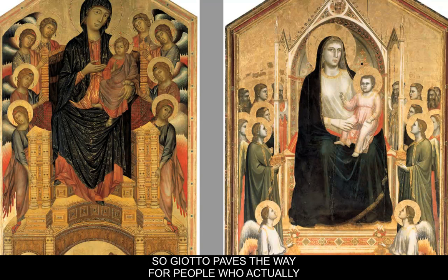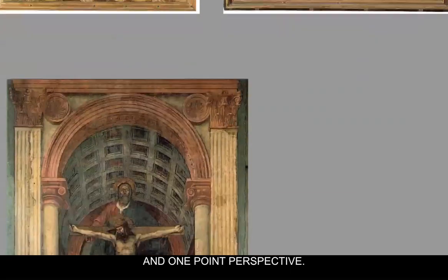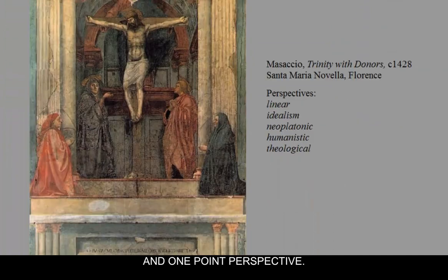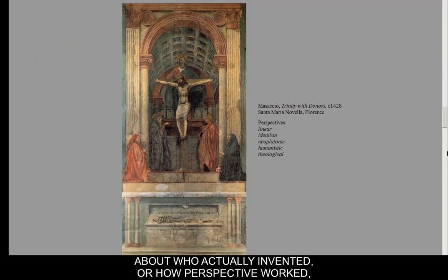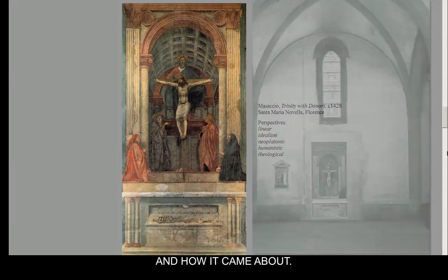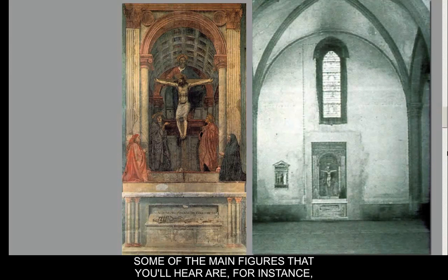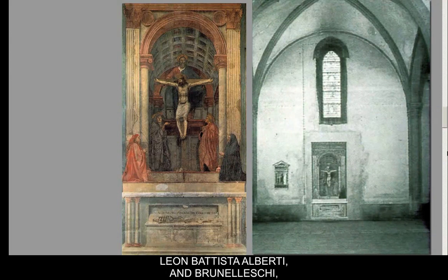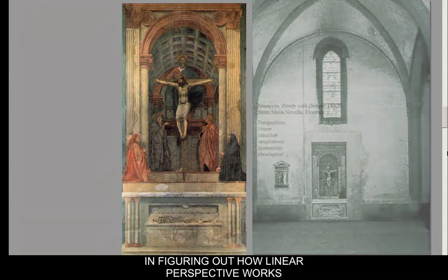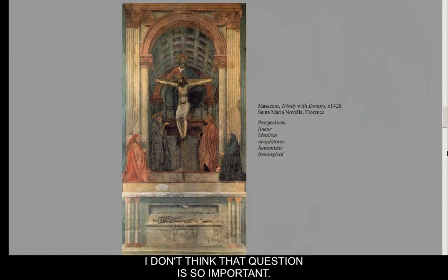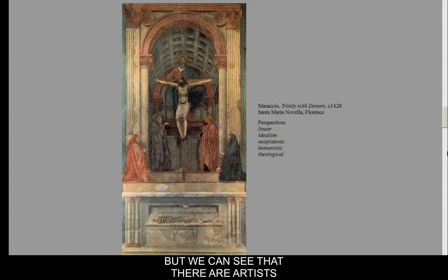So Giotto paves the way for people who finally discover two-point and one-point perspective. There seems to be debate about who actually invented perspective and how it came about. Key figures credited include Leon Battista Alberti and Brunelleschi, who are credited with at least crystallizing how linear perspective works during the Renaissance. It was kind of an evolution, and we can see artists who combine all of these perspectives together.